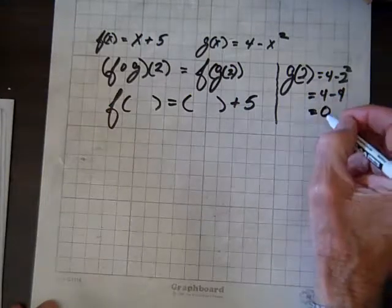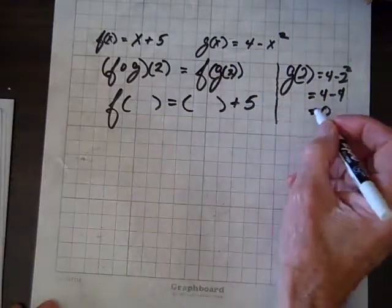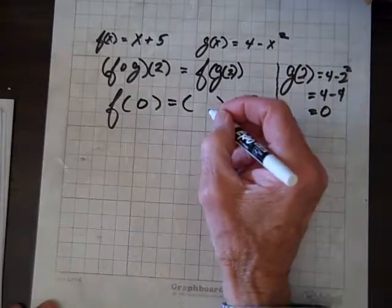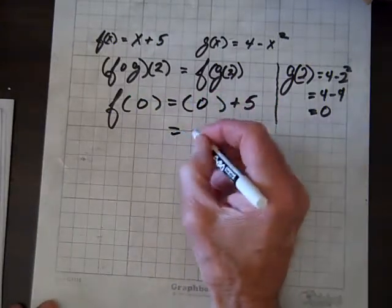So, g of 2 equals 0. So, I'm going to put a g of 2 in here, but g of 2 is 0, so I'll just put 0 there for g of 2, and 0 here. And what we get back is 5.